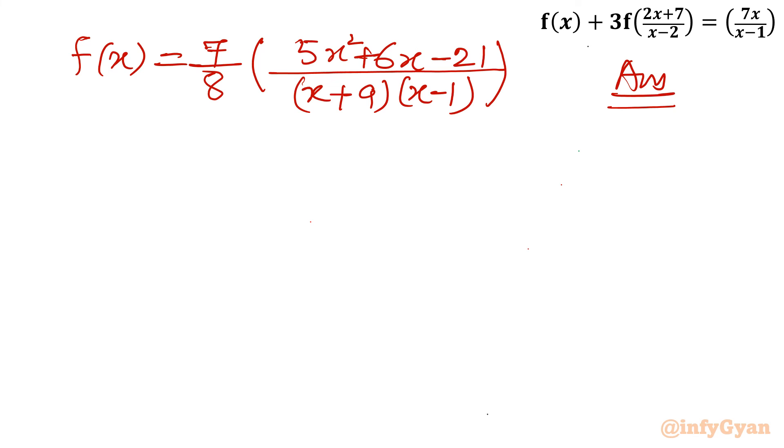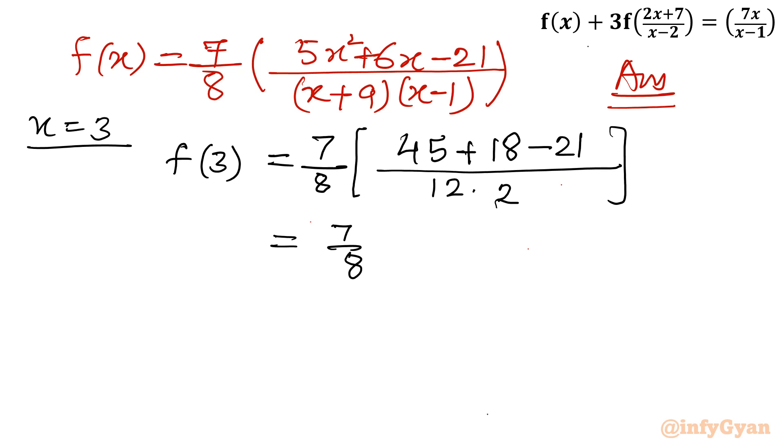Now the second part: we have to find the value of f(3) also. Let us put x = 3. f(3) will become (7/8). Let us find the numerator first: 5x² is 45, 6 times 3 is 18, minus 21. Over x+9 is 12, 3-1 is 2. Now what I will be having on the right hand side: just simplify it, 7/8. I will get 45 + 18 is 63, minus 21 is 42. So I will write 42 over 12 times 2. Now I need to check which number I can cancel: 21, 7. So I will get my answer 49/32.